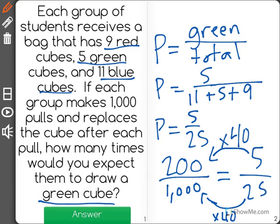So 5 times 40 is equal to 200, showing that if you were to pull 1,000 cubes, 200 of them would be green.